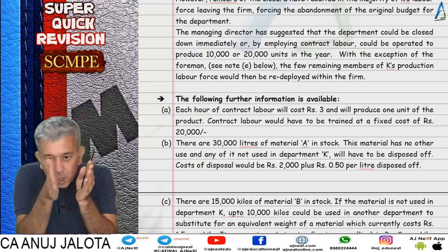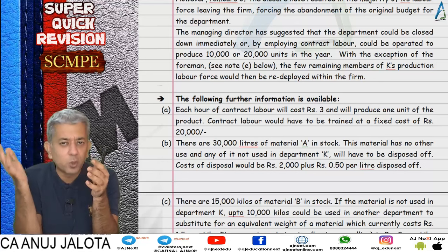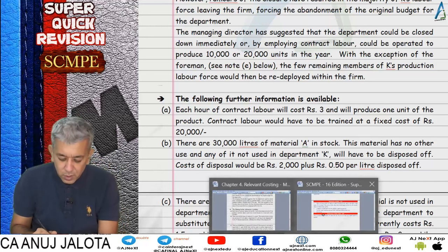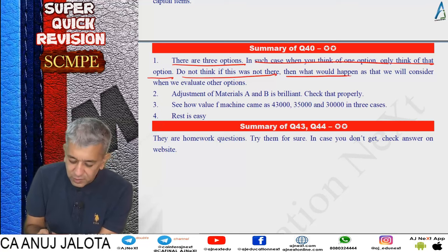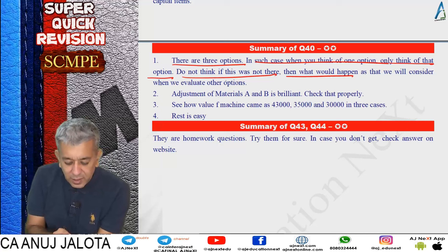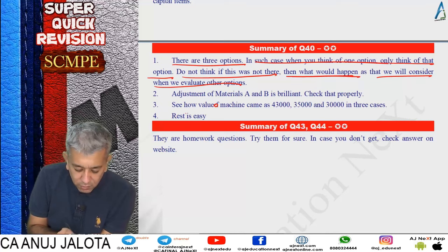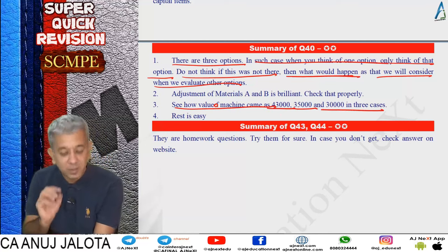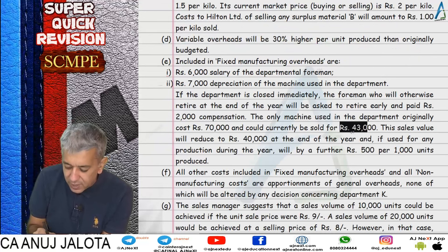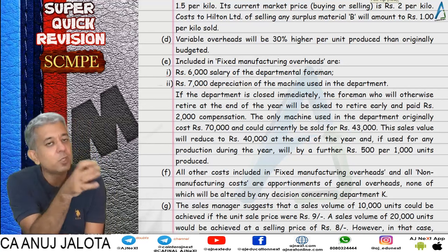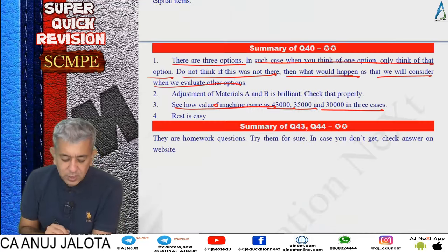When taking all three options together, when you think of one option only think of that option - don't think about what happens under another option, as that will be considered separately. See how the machine value comes to 43,000, 35,000, and 30,000 in the three cases. If you shut down, sell machine today for 43,000. In another case sell after one year for 40,000 - but if unused for a year, its value falls by a certain amount more.